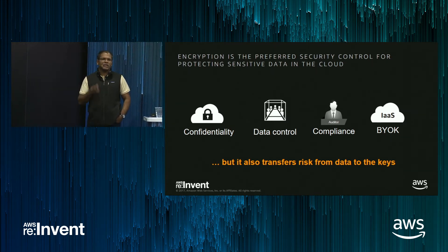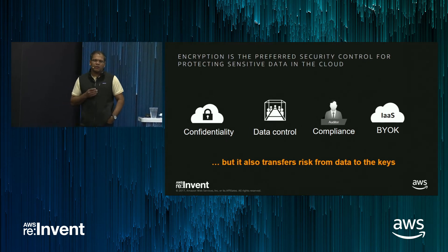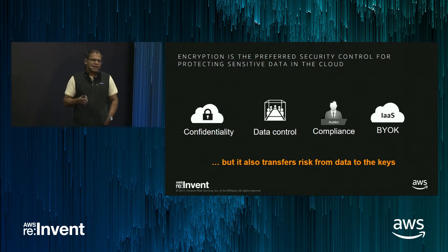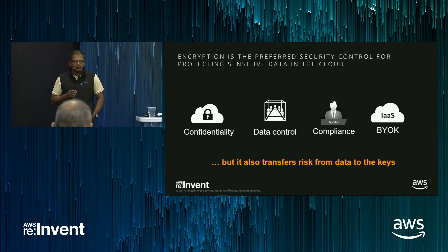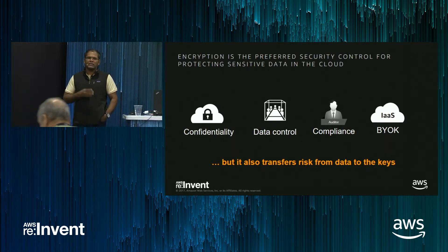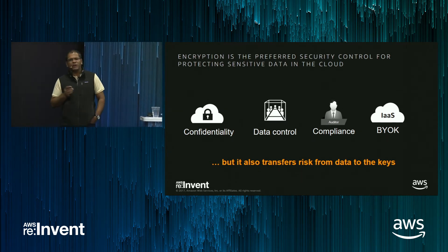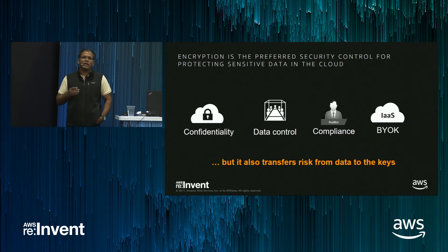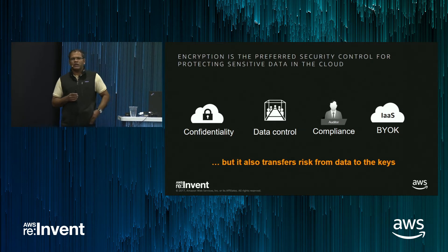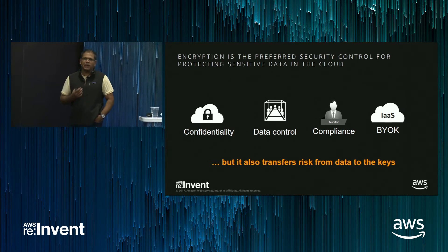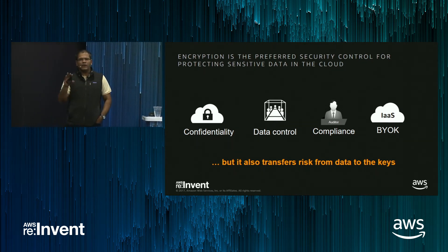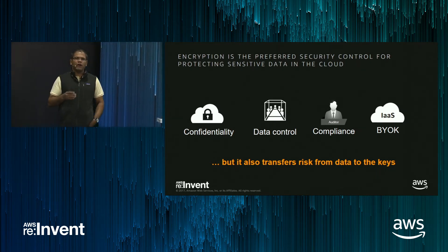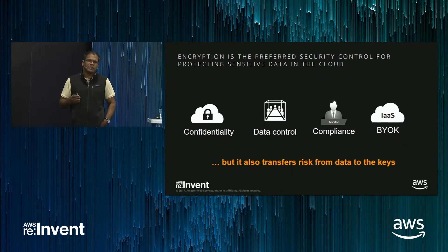The third reason is compliance — PCI, GDPR, HIPAA, and numerous other compliance mandates require you to encrypt information or data belonging to your customers. Encryption is a great control as proof to your auditors that you are protecting customer sensitive information. The last thing is a growing trend we believe is the future for most cloud service providers: BYOK, or Bring Your Own Key. Services like EBS volumes, S3, and RDS within AWS have native encryption capability that integrates nicely with a separate key management system where you can bring the master key from an external HSM or external key manager.